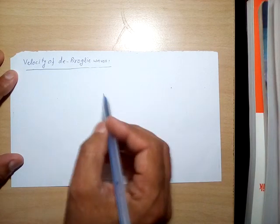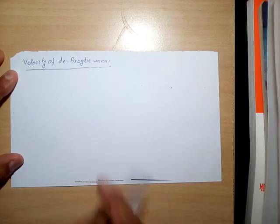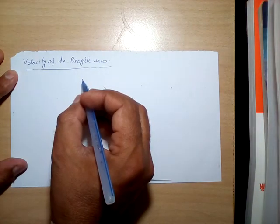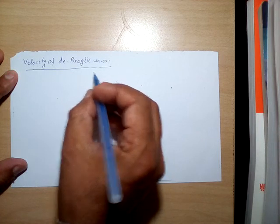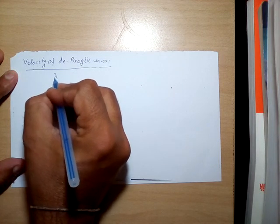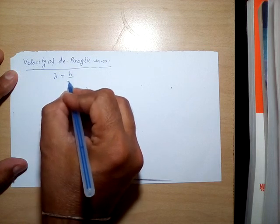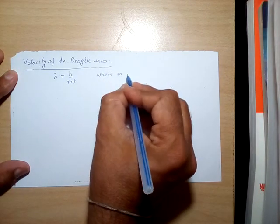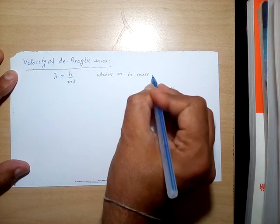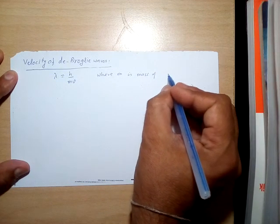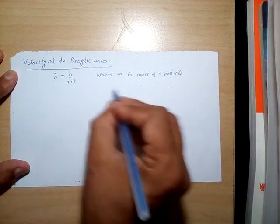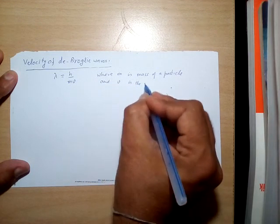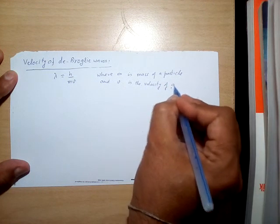We know that the waves are associated with the moving particle — we call them de Broglie waves or matter waves. In an earlier video, I calculated the expression for the de Broglie wavelength: lambda is equal to h divided by mv, where M is the mass of a particle and V is the velocity of the particle.